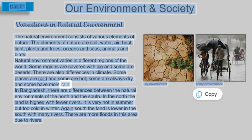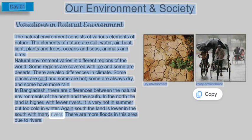In Bangladesh, there are differences between the natural environments of the north and the south. In the north, the land is higher with fewer rivers; it is very hot in summer but too cold in winter. In the south, the land is lower with many rivers, and there are more floods in this area due to rivers.